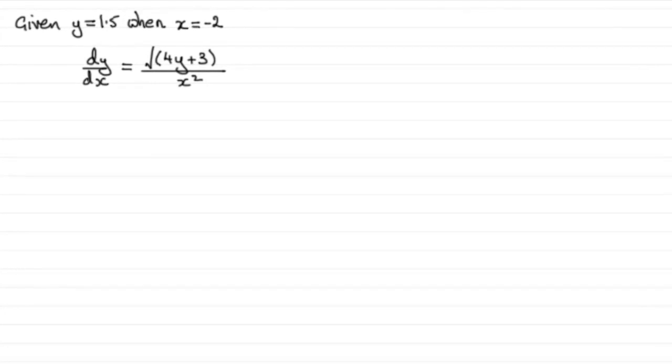In this question we're asked to solve this differential equation dy/dx equals the root of 4y plus 3 all over x squared. We're given that y equals 1.5 when x equals minus 2, and we're asked to give our answer in the form y equals some function of x. So how do we do something like this?